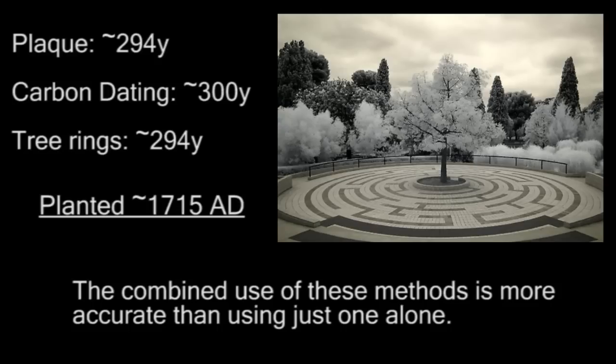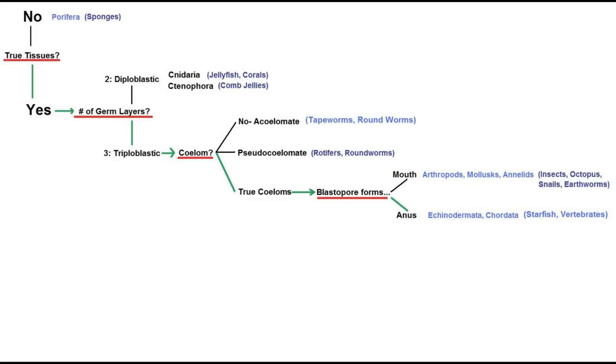The carbon dating and dendrochronology provide a higher probability of accuracy than the tree's historical significance alone. Now let's move on to evolution. When assessing relatedness, there are certain diagnostic characteristics that organisms have. For the most part, these represent a major evolutionary breakthrough — a new feature that's never been seen before.